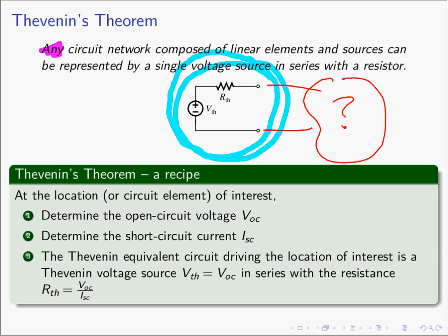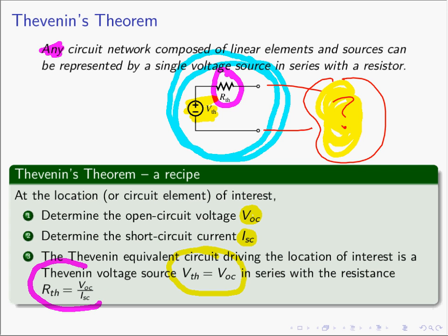To find these magical numbers of V_th and R_th: take the load resistor, make it an open, and find VOC. Then short it out and find ISC. The voltage value V_th equals VOC, and the resistor value R_th equals VOC over ISC. Thevenin's theorem allows us to take arbitrarily complicated circuits and represent them by something very simple — just a voltage source in series with a resistor. This powerful theorem gives great insight into complicated problems. We'll come back and talk about a similar result called Norton's theorem next.